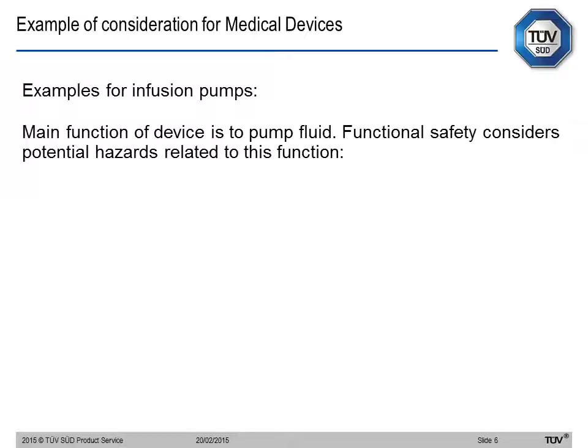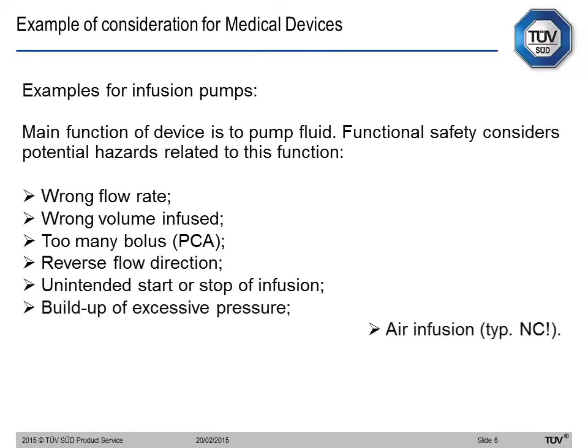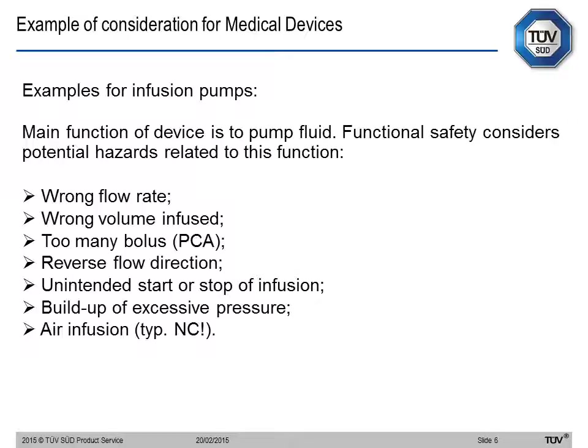In medical devices, we have an example with infusion pumps. The main intended use is to pump fluid. Functional safety considers different hazards related to: wrong flow rate, wrong volume infused, too many boluses for patient-controlled analgesia, reverse flow direction, unintended start or stop of infusion, buildup of excessive pressure, and air infusion. This is just to give you an idea of what we look for in a medical device for functional safety.